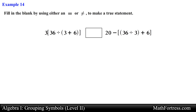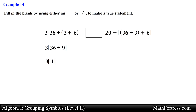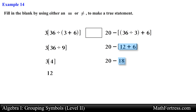Let's try the next one. Once again we simplify the left hand side, which has nested grouping symbols. We work the innermost — the parentheses — first: 6 plus 3 equals 9. Then within the bracket we take 36 divided by 9 which equals 4, and finally multiply by 3 to get 12. The right hand side also has nested grouping symbols. We take 36 divided by 3 which equals 12, then add 6 to get 18. Finally 20 minus 18 equals 2. Since 12 does not equal 2, we use a does-not-equal symbol.